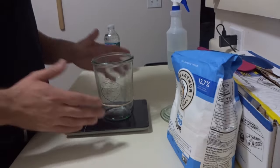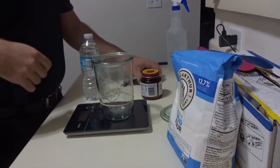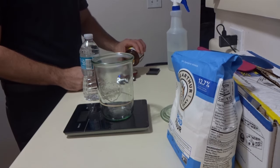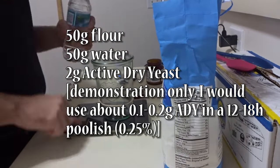Alright, guys. So today I'm making a poolish, or earlier I made a poolish, with a ton of yeast. It's 50 grams of King Arthur bread flour, 50 grams of water, and 2 grams of active dry yeast.